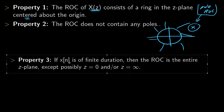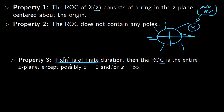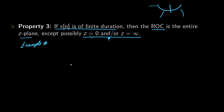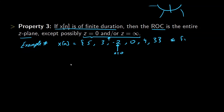Property three states that if X of N is a finite duration signal, then the region of convergence is the entire Z-plane, except possibly Z equal to 0 and Z equal to infinity. For example, say we have X of N equal to {5, 3, -2, 0, 4, 3}, where the time index N=0 is at the value minus 2. This is a finite signal — it starts at N equal to minus 2 and terminates at N equal to 3.